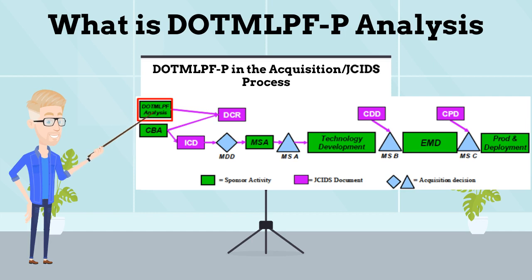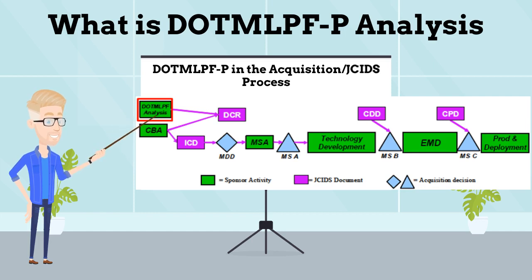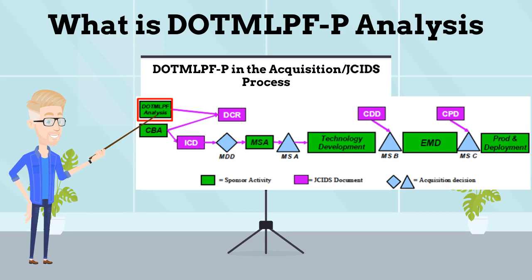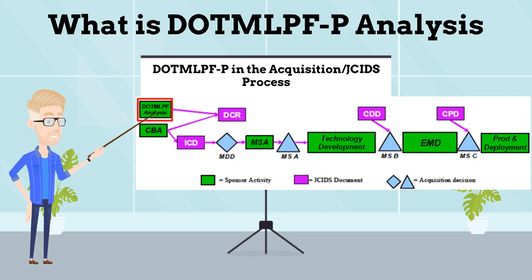Depicted on the figure is where the DOTP Analysis takes place in the requirements and acquisition process. As you can see, it takes place at the very beginning of each process. The results of the DOTP Analysis will determine the start of both processes if a material solution is recommended. If a non-material solution is recommended, a DOTP Change recommendation will be initiated.